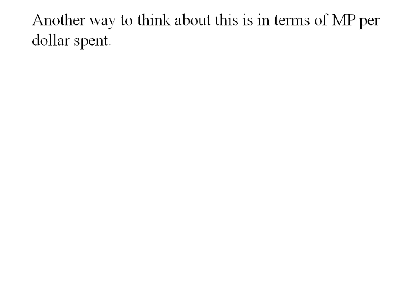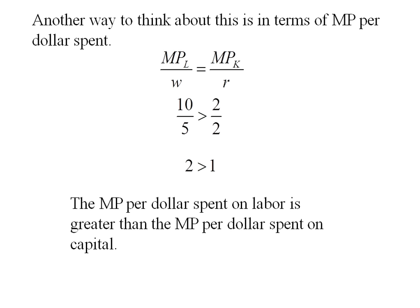Another way to think about it is in terms of marginal product per dollar spent. So the marginal product of labor divided by the price of labor should be equal to the marginal product of capital divided by the price of capital. Plugging in what we know, we get 10 over 5 and 2 over 2, and 2 is greater than 1. So the marginal product per dollar spent on labor exceeds the marginal product per dollar spent on capital, which means we should use more labor.